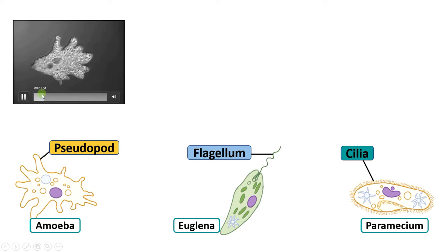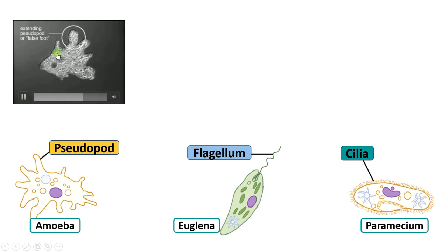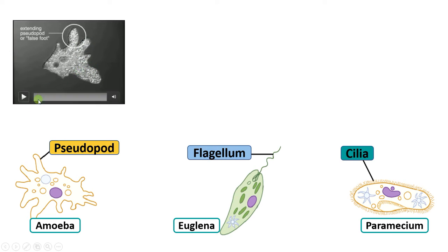Let's begin with pseudopod. Pseudopods are fine cytoplasmic projections that help in the movement of organisms like amoeba. This structure is made up of fine filaments and microtubules. These are temporary projections that help in movement.